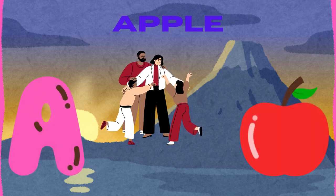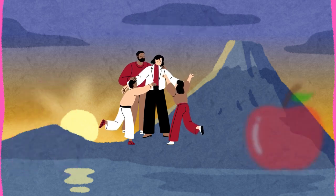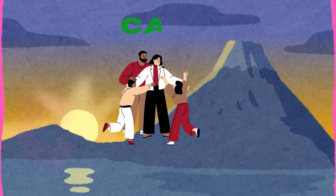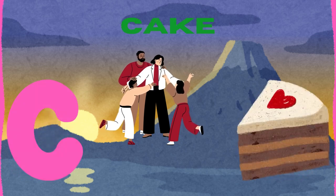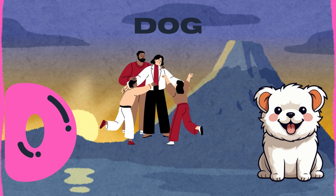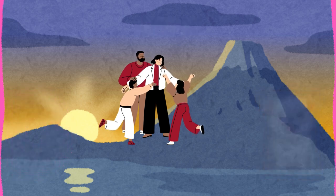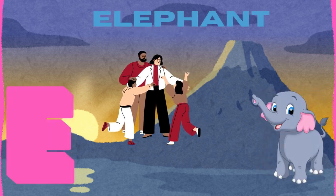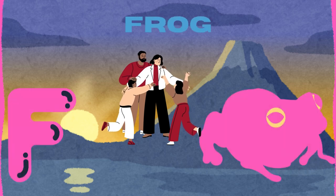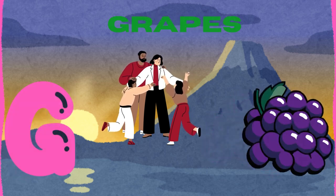E for apple, B for bun, C for cake, B for dog, E for elephant, F for frog, G for...